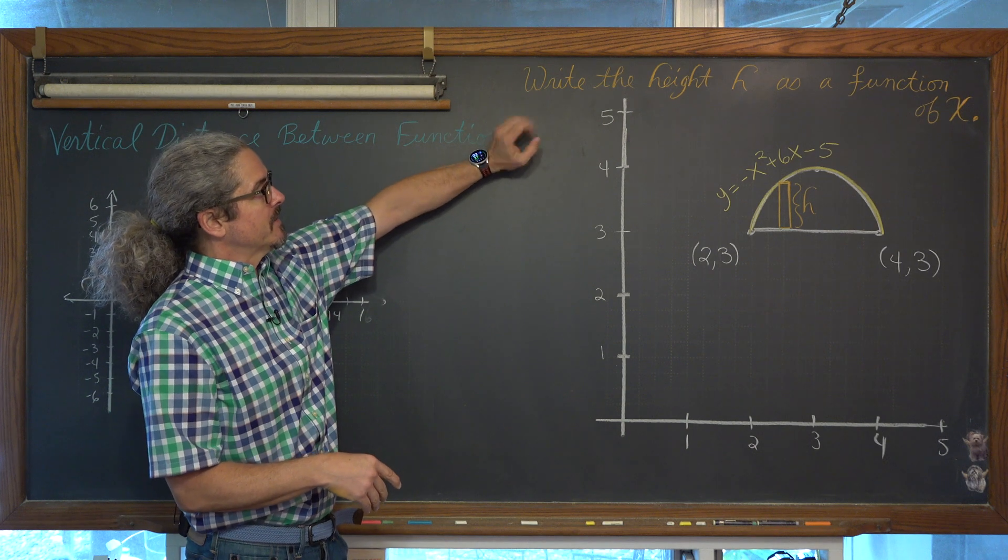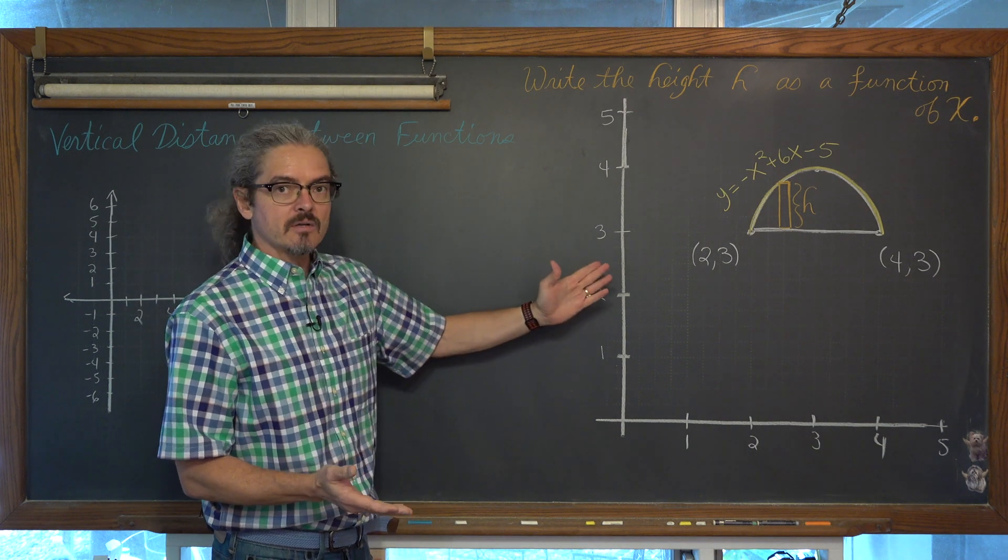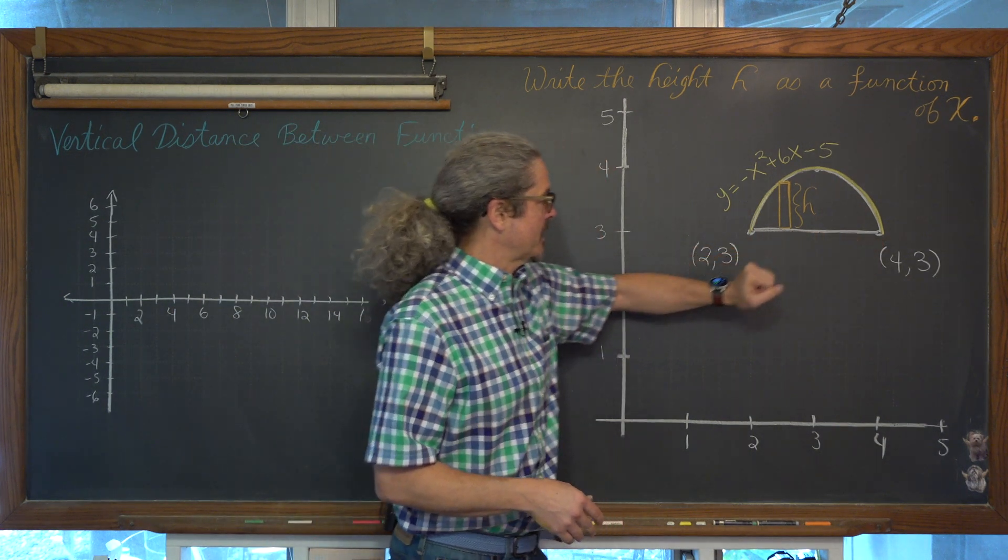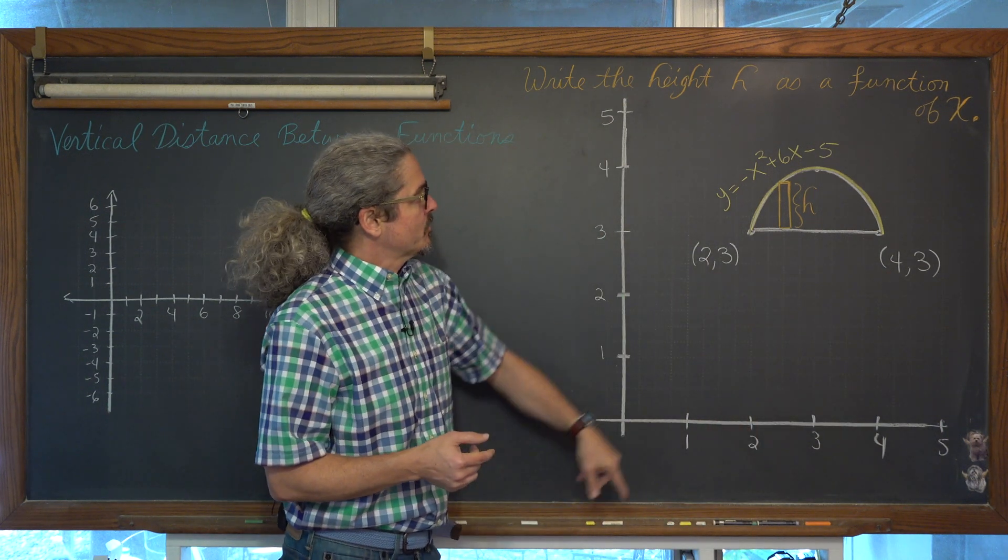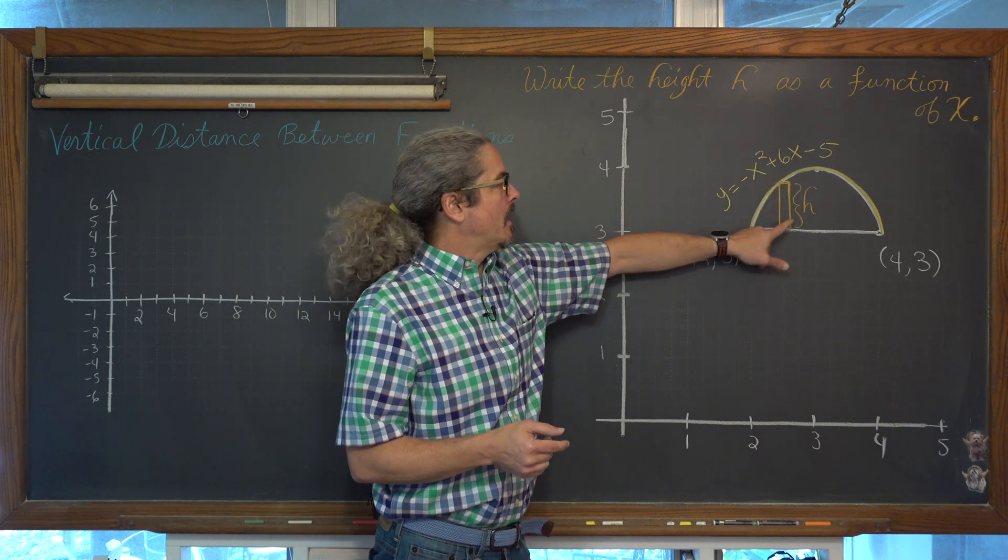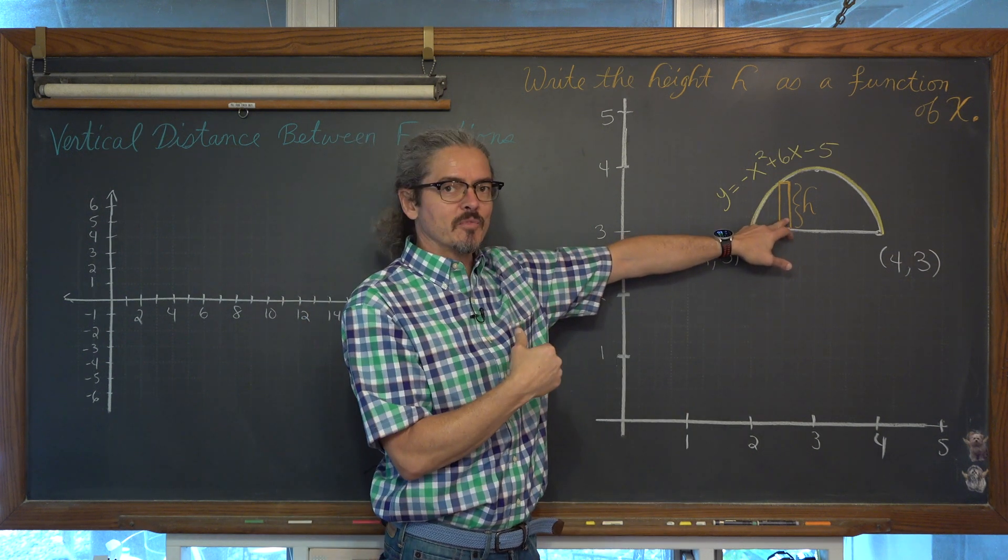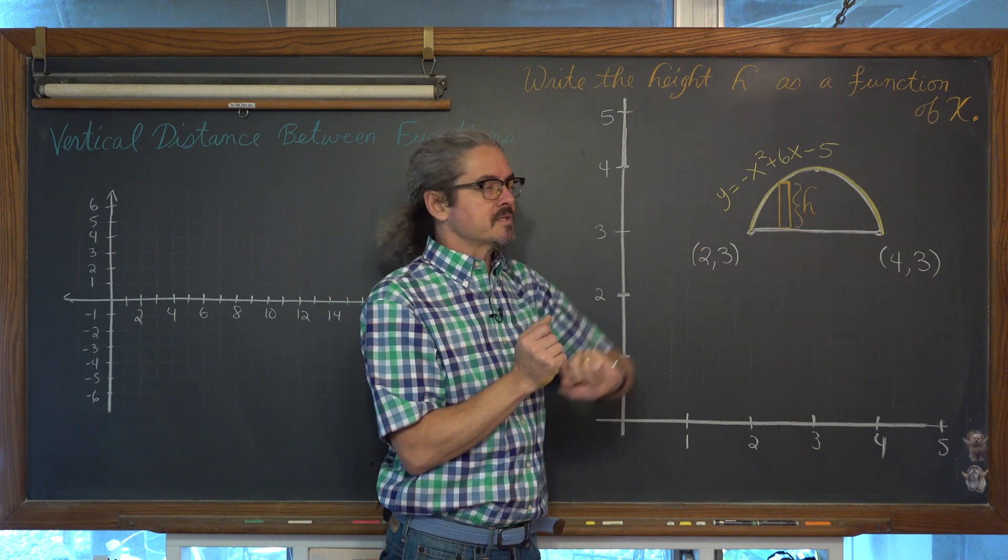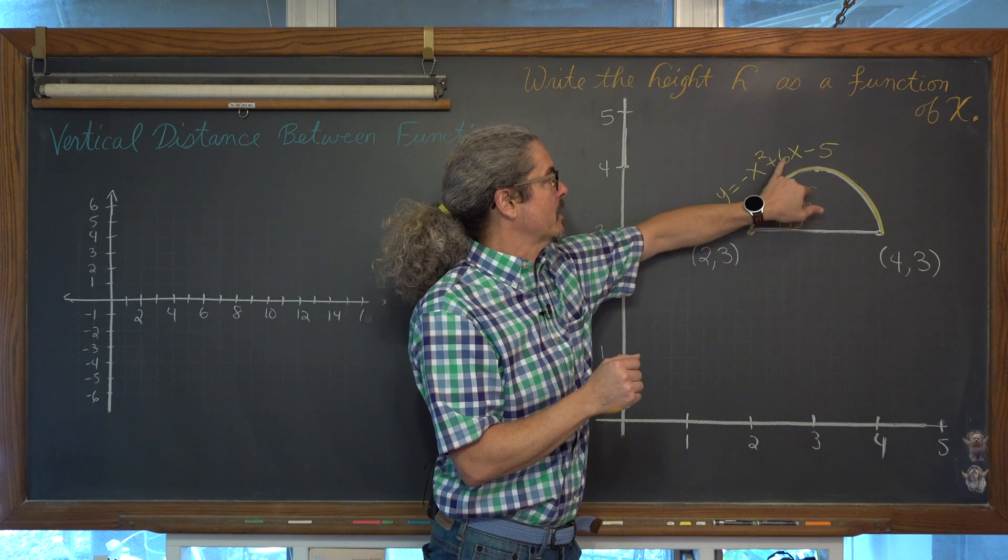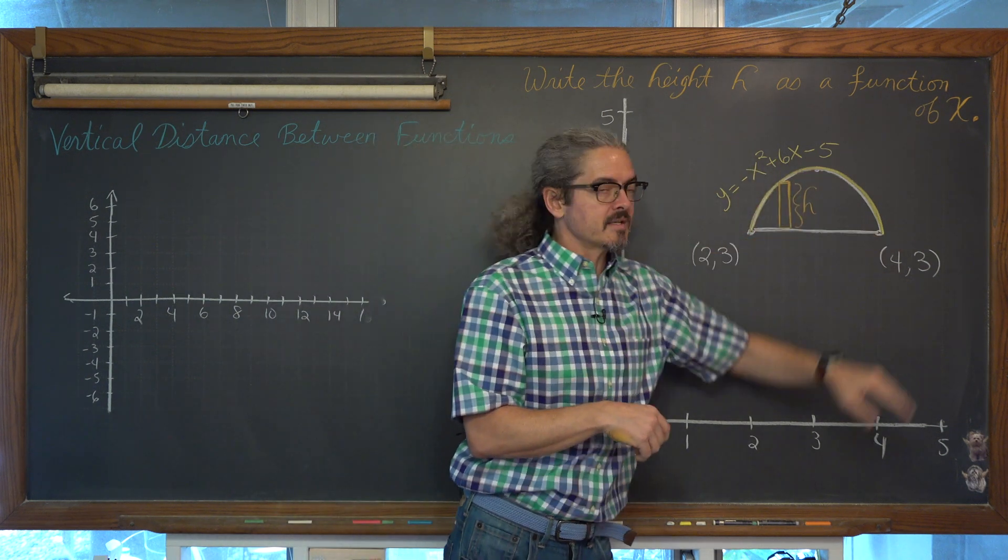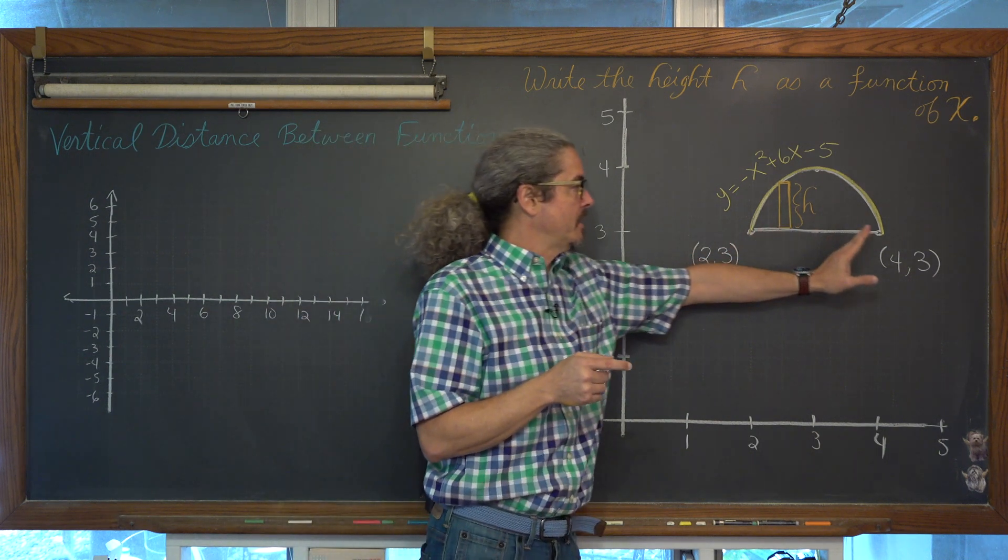This type of question today was a problem that a lot of my kids did not initially figure out. So we talked about it today after they finished their homework, and I'm going to pass this on to you. The problem said write the height h as a function of x. So we have a region on an xy axis, we have a horizontal line connecting the points 2,3 and 4,3.